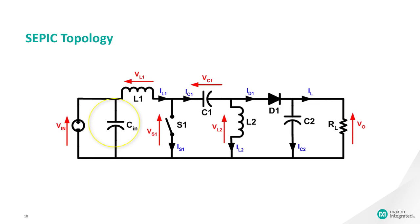The boost-buck capabilities of the SEPIC are possible because of capacitors C1 and inductor L2. Inductor L1 and switch S1 create a standard boost converter, which generates a voltage that is higher than VIN, whose magnitude is determined by the duty cycle of the switch S1.